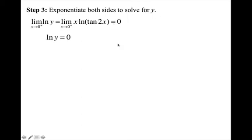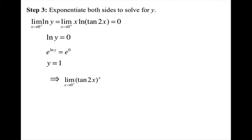But I'm not done. Step 3: exponentiate both sides to solve for y. From step 2, the limit of the right-hand side is 0, so ln(y) = 0. Exponentiating both sides gives y = e⁰ = 1. Therefore, the limit as x→0+ of (tan(2x))^x equals 1.